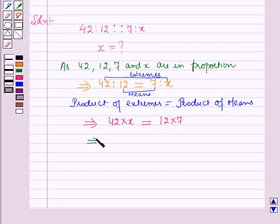This implies x is equal to 12 into 7 over 42. Now here 7 into 6 is 42 and 6 into 2 is 12.